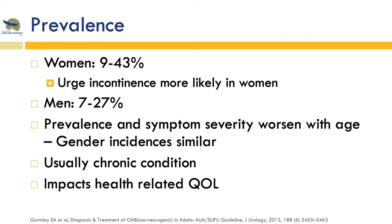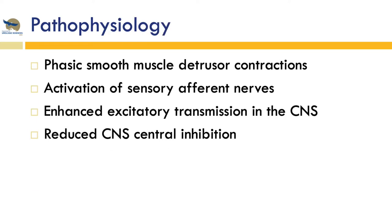This is usually a chronic condition and it has quite an impact on health-related quality of life. Patients with OAB have been shown to experience more anxiety and depression compared to healthy controls. It's thought that the pathophysiology of OAB is due to enhanced excitatory mechanisms and reduced CNS central inhibition of smooth muscle contractions, and there's also an over-activation of the afferent sensory nerves in the micturition center.